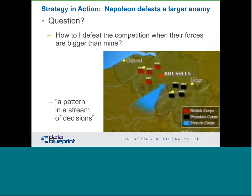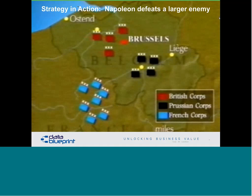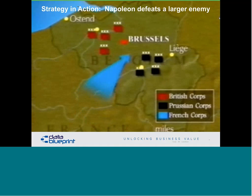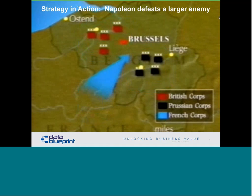One strategic idea is: how do I defeat the competition when their forces are bigger than mine? The answer is divide and conquer. Napoleon, shown in blue, faced two armies in red and black. His strategy was to hit hard at their intersection, causing them to retreat toward their supply lines, then turn attention first to one and then the other. He hit them very hard, then his troops were agile enough to turn and defeat the Prussians in black, then the British in red.